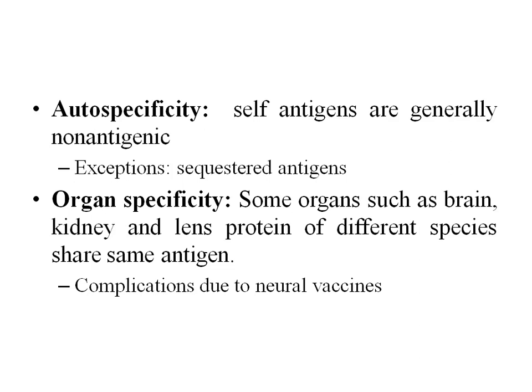Auto-specificity refers to some self-antigens which are generally non-antigenic but can become antigenic if exposed later in life — for example, sequestered antigens like lens antigens, sperm antigens, and brain tissue. They are normally protected by barriers or encapsulated so they are not exposed to the developing immune system in infancy, meaning the immune system is not primed to handle them, making them more antigenic.